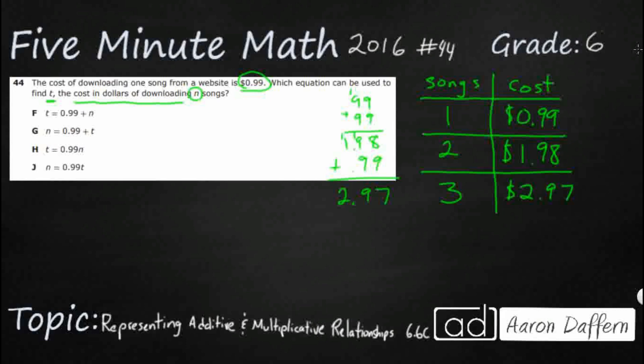Now notice what we're doing here is we're starting with our number of songs. In our problem, they give us a variable we could use in the equation. n is the number of songs, and this is our input. We are controlling the number of songs we have - 1, 2, 3, and so forth. The cost, they say, is t. That's our output.